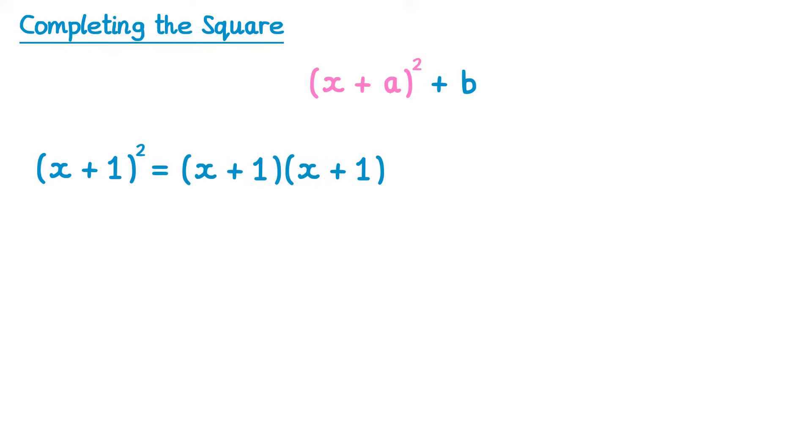And we know how to expand this set of brackets using FOIL. x times x, x squared, x times 1, plus x, 1 times x, plus x, and 1 times 1, plus 1. And then we can simplify the two terms in the middle to get x squared plus 2x plus 1.